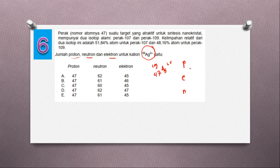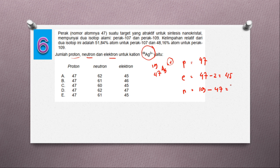Protonnya berapa? Elektronnya berapa? Neutronnya berapa? Proton sama dengan nomor atom, berarti protonnya 47. Elektron: muatannya 2+, berarti elektronnya 47 dikurang 2, sama dengan 45 — dia melepaskan 2 elektron. Neutronnya sama dengan 109 dikurang 47, sama dengan 62. Jadi jawabannya adalah A: proton 47, neutron 62, dan elektron 45.